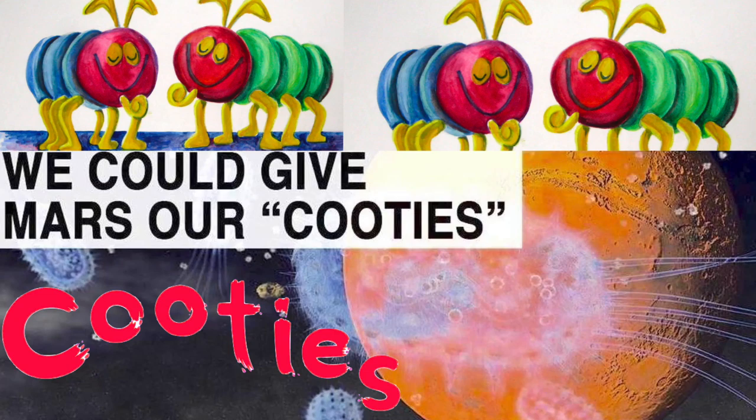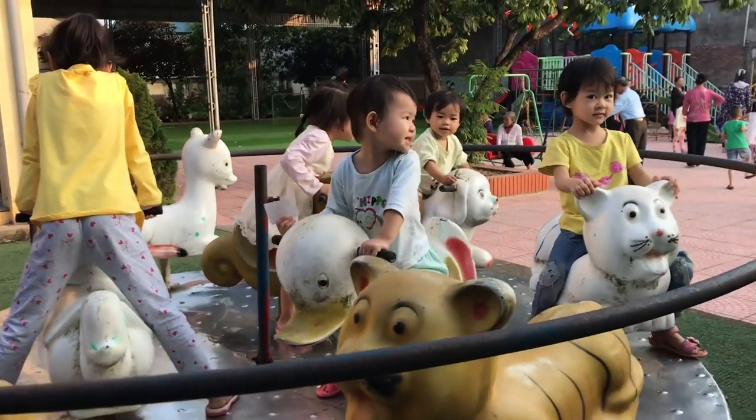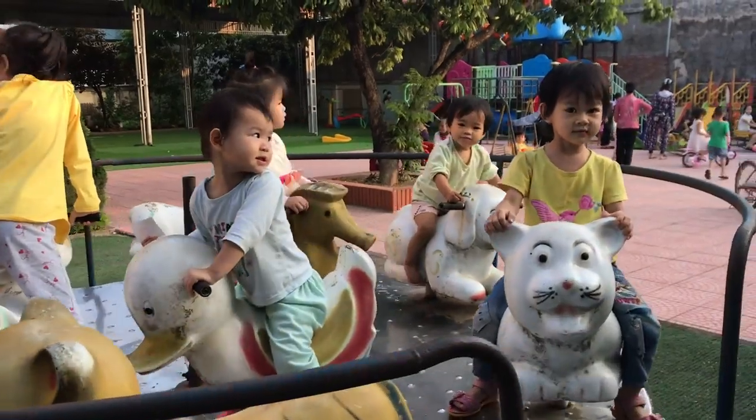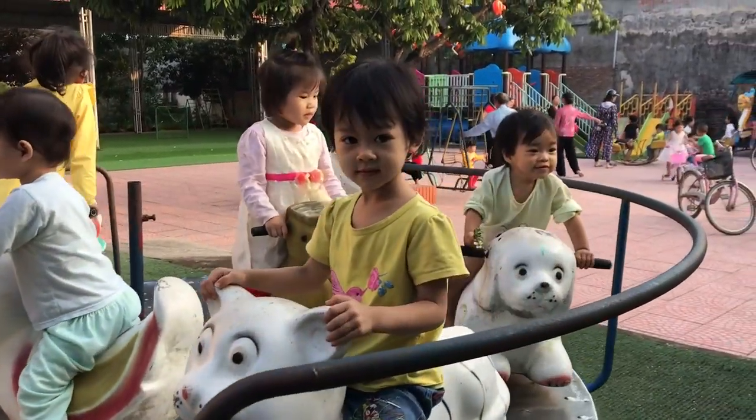Hey, this is Warren Redlich. I wanted to talk about cooties, or about a micro model of epidemiology and how diseases spread. I like to think of it in terms of cooties because that's what kids talk about — maybe it makes sense to kids.